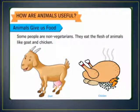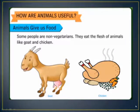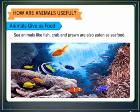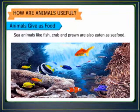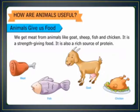Some people are non-vegetarian. They eat the flesh of animals like goat and chicken. Sea animals like fish, crab and prawn are also eaten as seafood. We get meat from animals like goat, sheep, fish and chicken. It is a strength-giving food and also a rich source of protein.